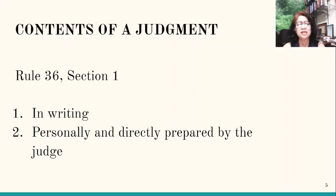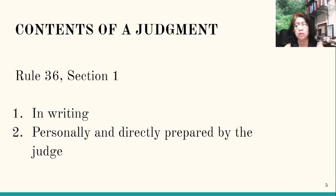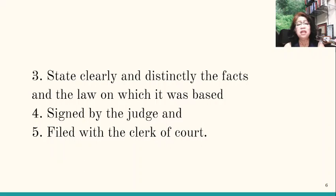Now let's go to the contents of a judgment. This is found in Rule 36, Section 1. According to this rule, the judgment must be in writing and it must be personally and directly prepared by the judge. So even if the judge has already announced the decision in court, if it is not in writing, it is not yet considered a judgment under the rule. The preparation should be directly and personally done by the judge who heard the case or the judge who is promulgating the decision. Number three, it must state clearly and distinctly the facts and the law on which it was based.